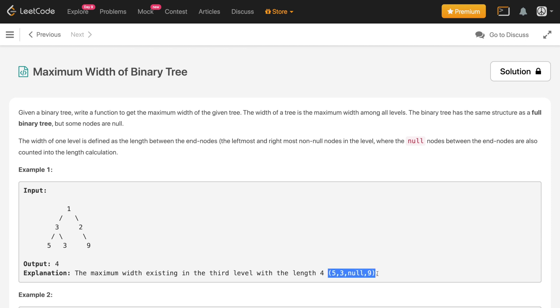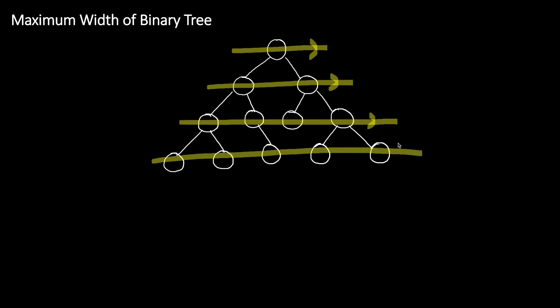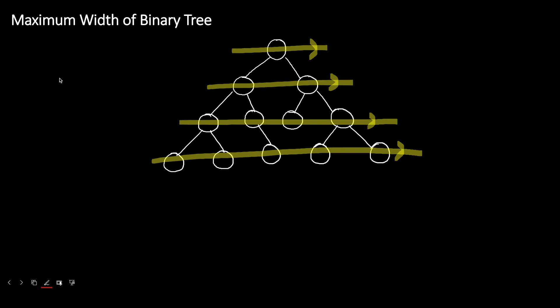I have drawn a binary tree and in this question we have to find the maximum width of the binary tree — that is, we find the width of each level and return the maximum. Since we have to find the width of each level, the first thing that should come to mind is the level order traversal or breadth first search. We iterate nodes level by level: first level, second level, third level, then fourth.